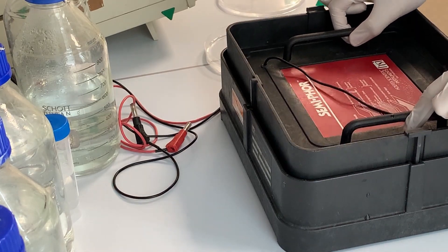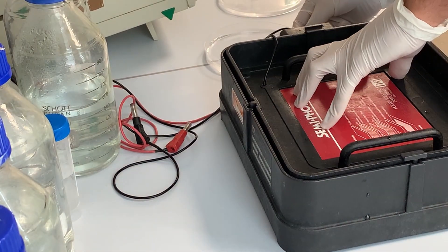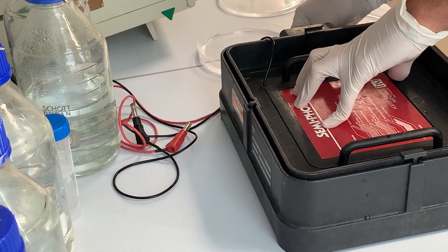I add and connect the lid to the blotting chamber and add three weights on top to assure that the contact between the two electrodes won't break off during the run.